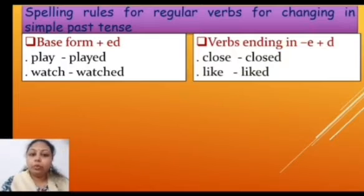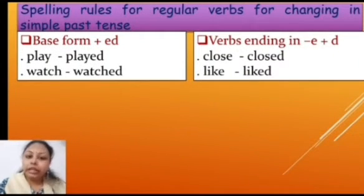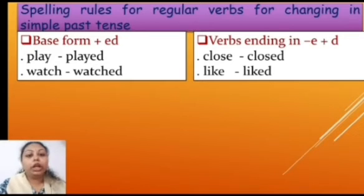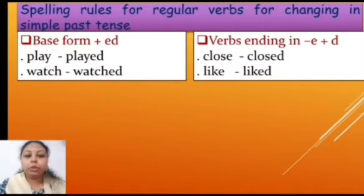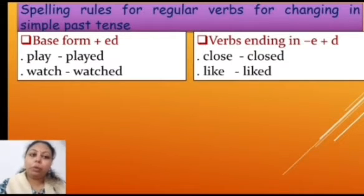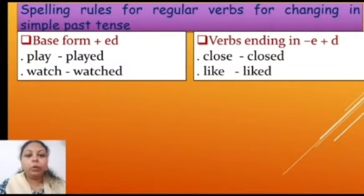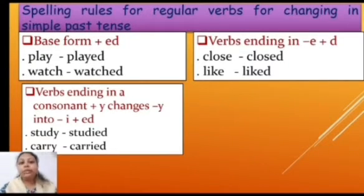But there are a few words which follow other rules. The second rule says that verbs ending in 'e' will add only 'd'. For example, 'close' (C-L-O-S-E) — here we add only 'd' to the word to make it simple past tense. Another example: 'like' (L-I-K-E) — here also we add only 'd' to make it simple past tense.